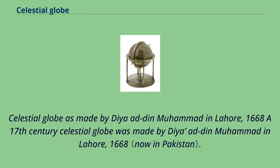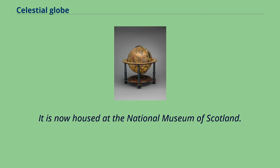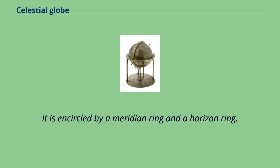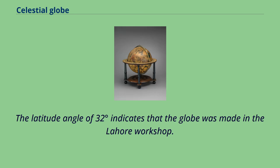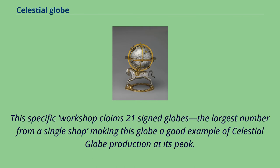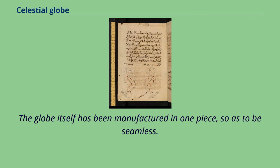A 17th-century celestial globe was made by Diyah ad-Din Muhammad in Lahore in 1668. It is now housed at the National Museum of Scotland. It is encircled by a meridian ring and a horizon ring. The latitude angle of 32 degrees indicates that the globe was made in the Lahore workshop, which claims 21 signed globes — the largest number from a single shop. The globe itself was manufactured in one piece so as to be seamless.